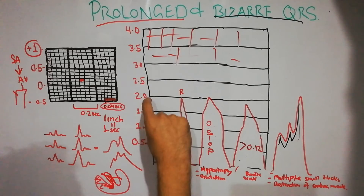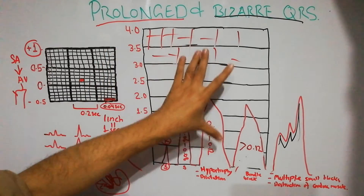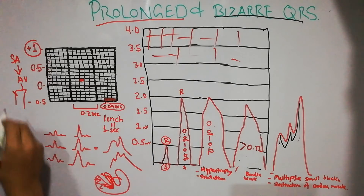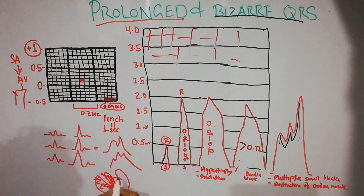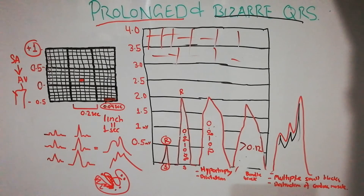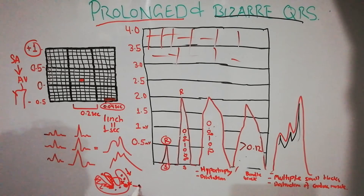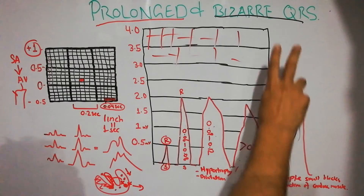There is another condition in which the heart has multiple small blocks, or where disease causes destruction of heart tissue. In these conditions, the depolarization current encounters a block or damaged tissue and gets reflected in another direction, causing the vector direction to keep changing. This results in a bizarre appearance of the QRS complex.